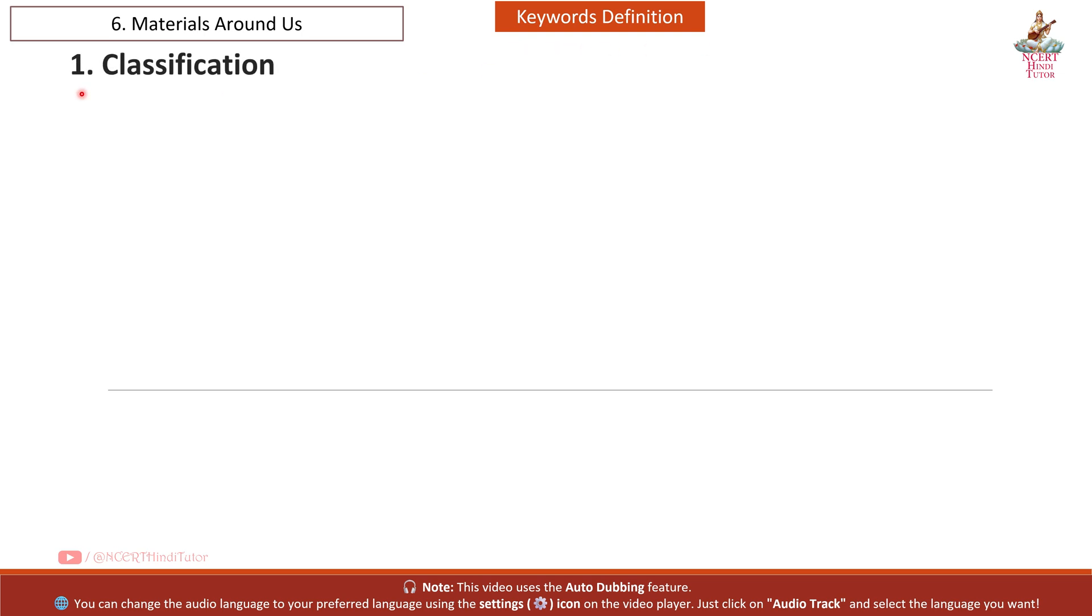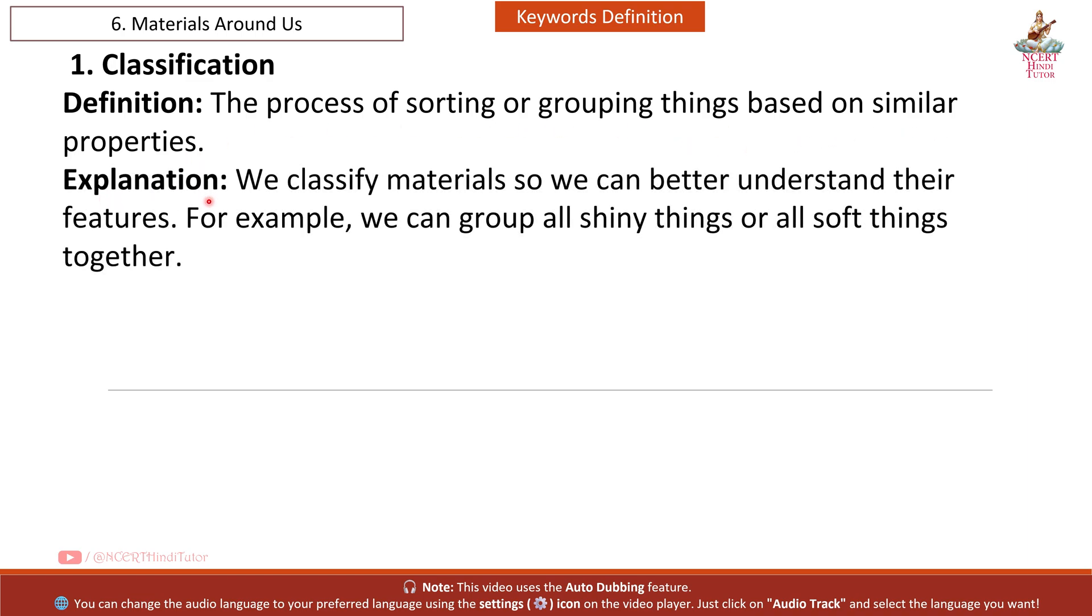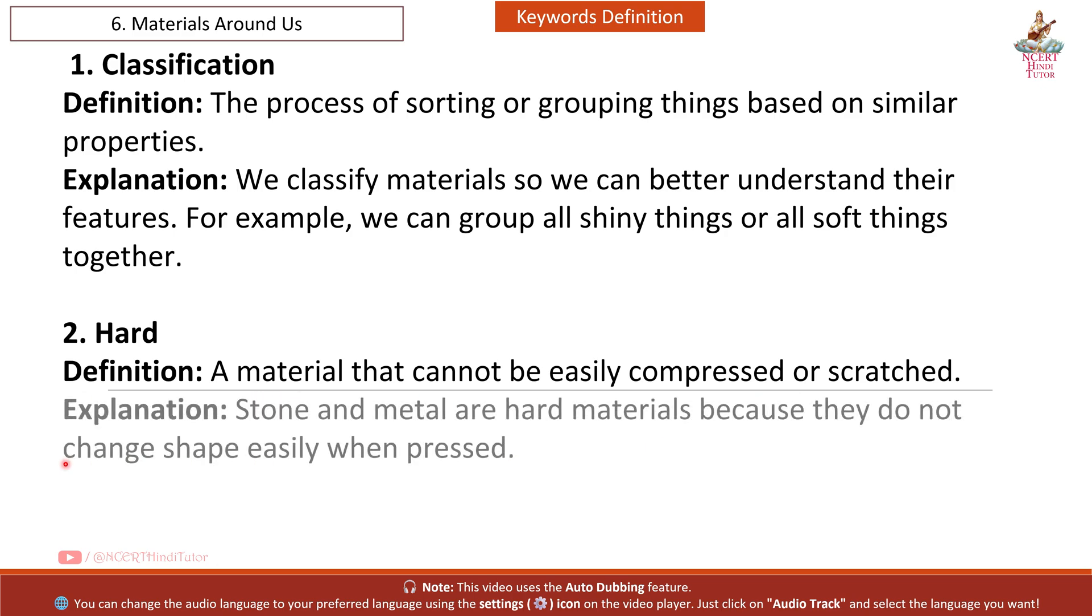Next, keywords definition. First: Classification. Definition: the process of sorting or grouping things based on similar properties. Explanation: we classify materials so we can better understand their features. For example, we can group all shiny things or all soft things together. Second: Hard. Definition: a material that cannot be easily compressed or scratched. Explanation: stone and metal are hard materials because they do not change shape easily when pressed.